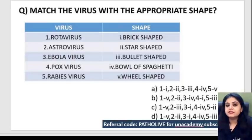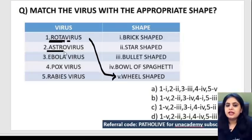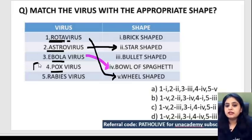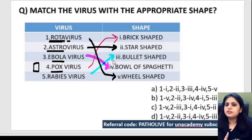Now let's move to the next set: match the virus with the appropriate shape. Rotavirus reminds you of a rotating wheel — so rotavirus is wheel-shaped. Astro sounds like a star — so astrovirus is star-shaped. Ebola sounds like bowl — so Ebola is a bowl of spaghetti shape. Pox is pox-in-a-box, meaning brick-shaped. And rabies is a bullet-shaped virus.